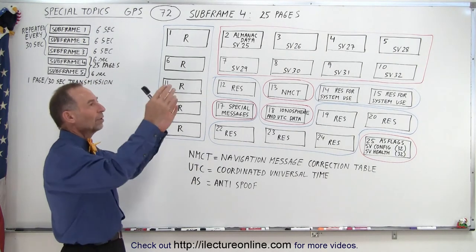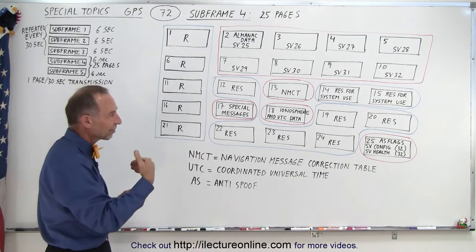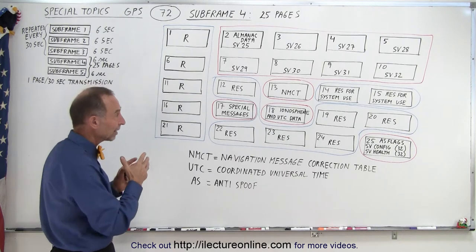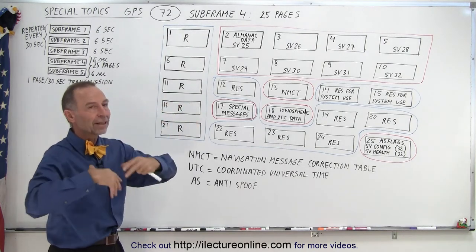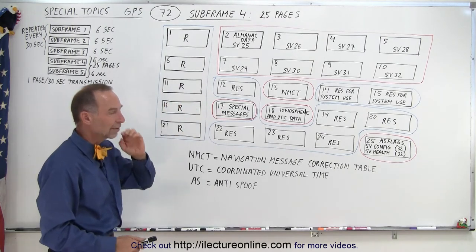So when you lock onto one satellite and you begin to download the information from that one satellite, it will tell you where all the other satellites are located so it's easy to find those satellites and begin tracking them because you will have the orbital information of all the satellites.